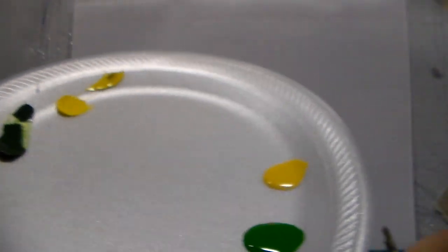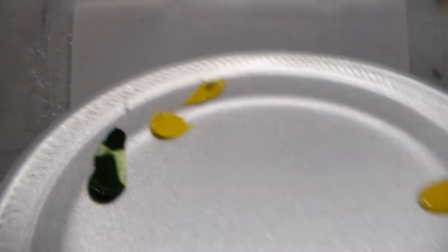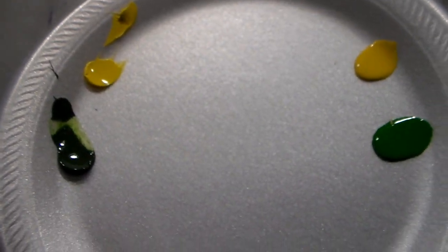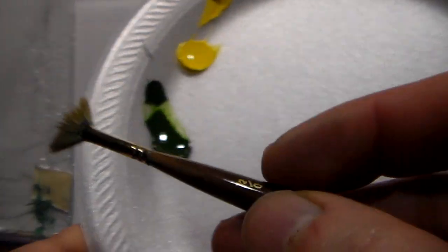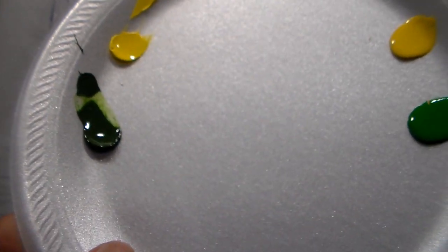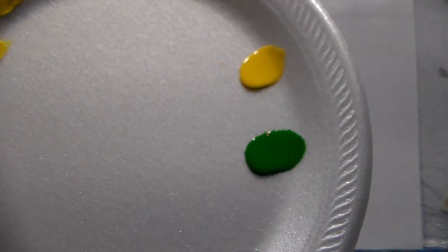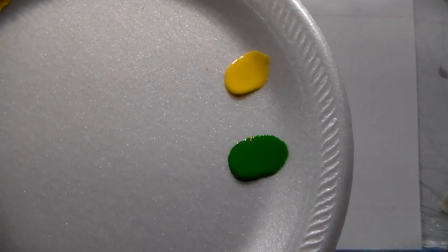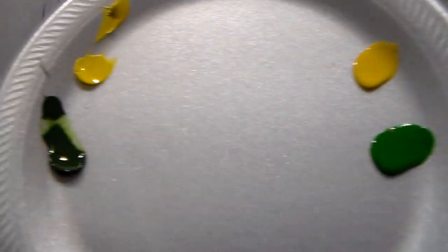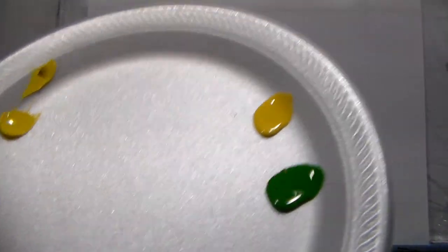All right. Now as you can see with this, I'm going to turn it vertical. That's the thick body acrylics on this side and that's the thin body. Thin body is already starting to run as you can see and that one's not.